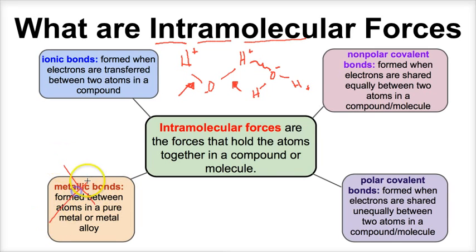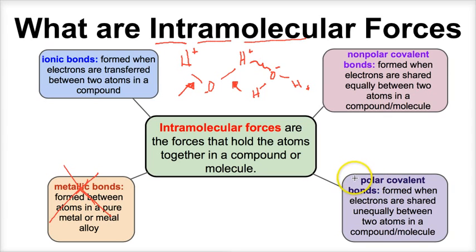We're not going to talk about metallic bonds in this video though. We're going to stick to ionic bonds, nonpolar covalent bonds, and polar covalent bonds. Hopefully by the end of this video you should be able to look at a compound or molecule and determine what type of chemical bonds exist between them.